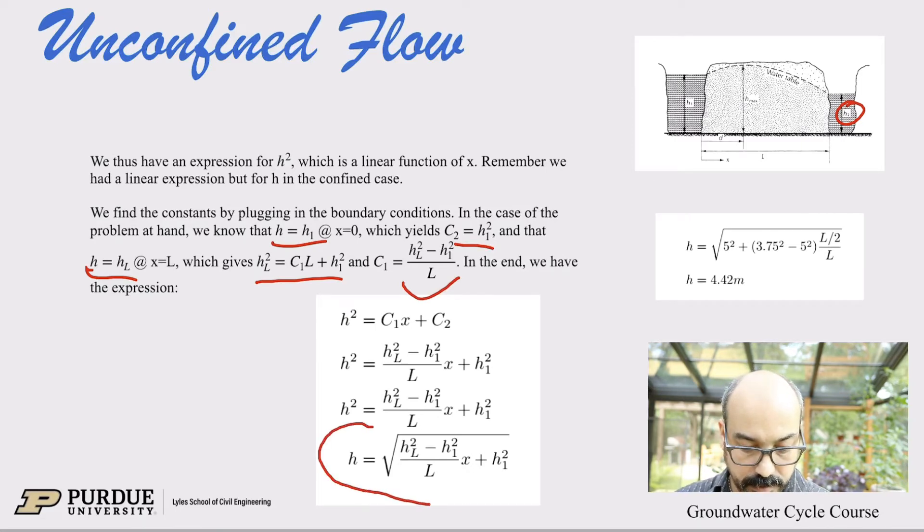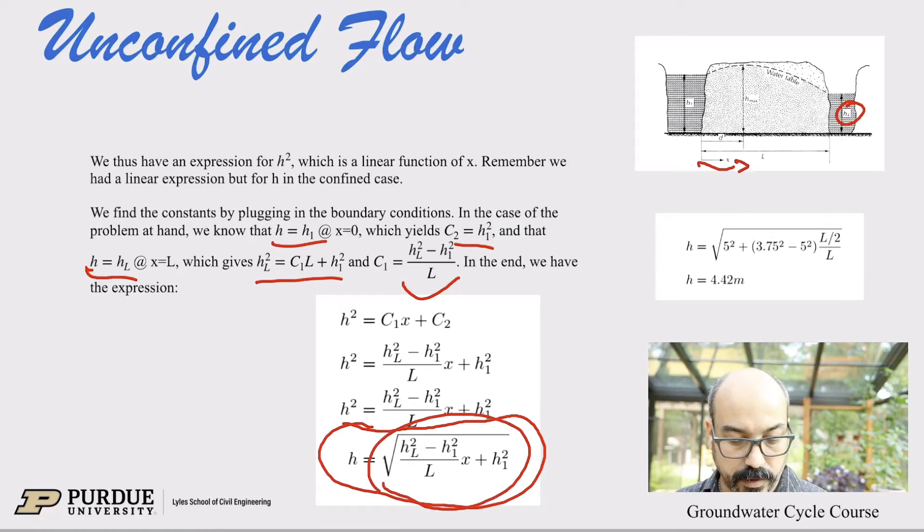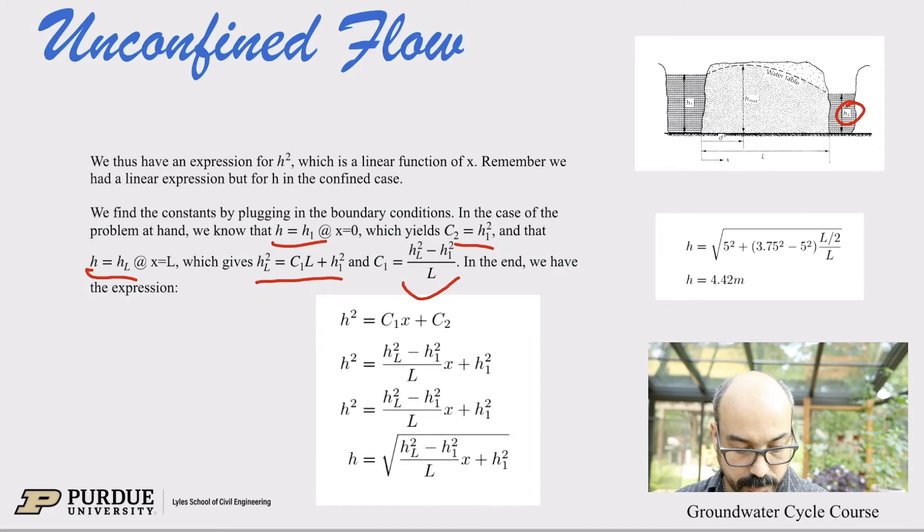So if h is h1 at x equals zero, that means that c2 equals h1². If h equals hL at x equals L, so in this case that would be h2, hL or h2. So h at L, so this is this number here, then that gives us the second constant or c1 is this business here. And then we can plug that back in everything. And we have in the end an expression for h of x. So now we have the head along the x-axis here is this expression. So it's the square root of the square of the boundary divided by L times x plus h1². So again, notice how we have the squares carried everywhere. And the profile is going to be some kind of a parabolic profile. It's in h², or it's the square root of x, if you will.